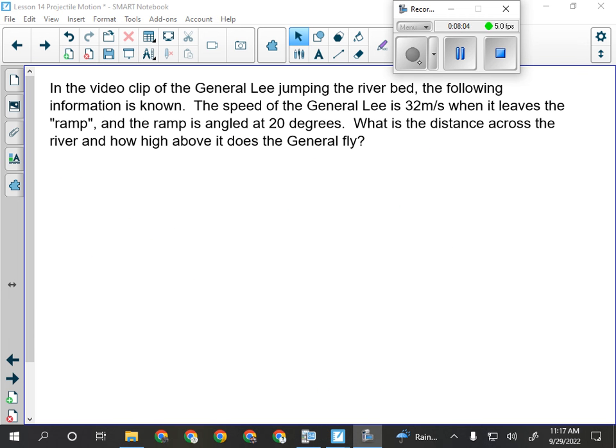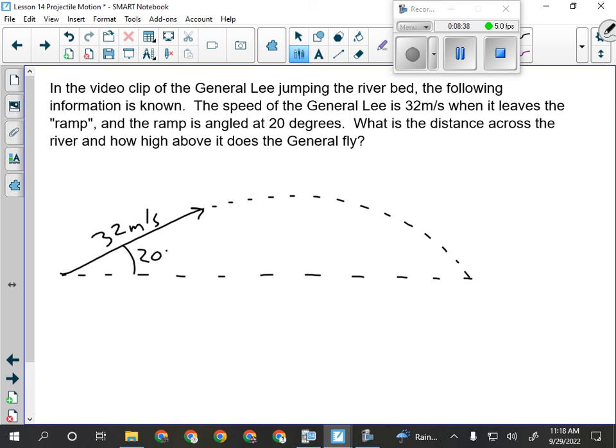So we'll walk through this one together because we've only done one other angled projectile. So, we've got the General Lee jumping over the riverbed. The information that we know is that the speed the General Lee launches itself at is 32 meters per second, about 120 kilometers now. It is going to follow that projectile arc across the river, landing on the other side, at the same height it took off from, or at least we're going to assume that. The angle of the launch is 20 degrees. That's all the information they give us. 32 meters per second, 20 degrees. And I have to calculate two things. The distance horizontally across the river, and the maximum height of the car as it goes over.